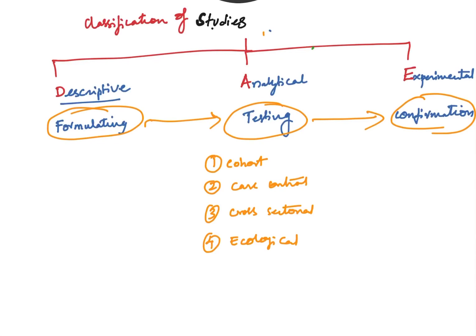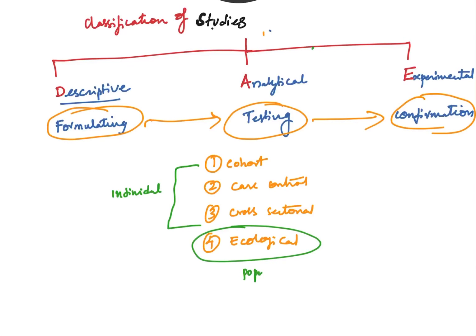A commonly asked question concerns the individual unit in each study. In the cohort study, case control study, or cross-sectional study, the individual unit is an individual. However, in the ecological study — also called the correlation study — the individual unit is a population.